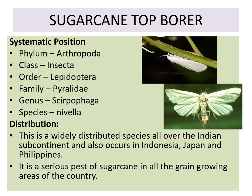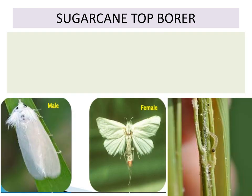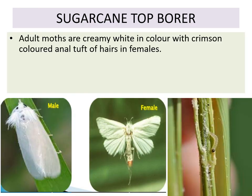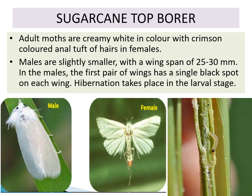It is a serious pest of sugarcane in all the cane-growing areas of the country. Adult moths are creamy white in color with a crimson-colored anal tuft of hairs in the female. Males are slightly smaller with a wingspan of 25 to 30 mm, and the front pair of wings has a single black spot on each wing.